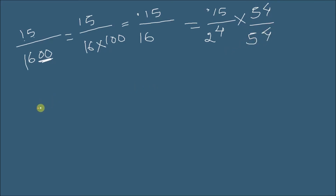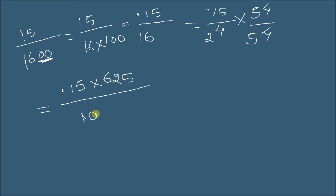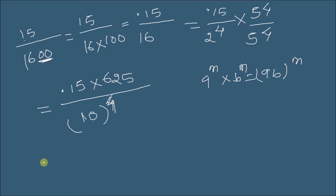This gives us 0.15 multiplied by 625 in the numerator, since 5 to the power 4 equals 625 (5, 25, 125, 625). The denominator becomes 10 to the power 4, because by the exponent property a to the power m times b to the power m equals (ab) to the power m. So we multiply 625 by 0.15, or equivalently multiply 625 by 15 and then divide by 10 to the power 4.